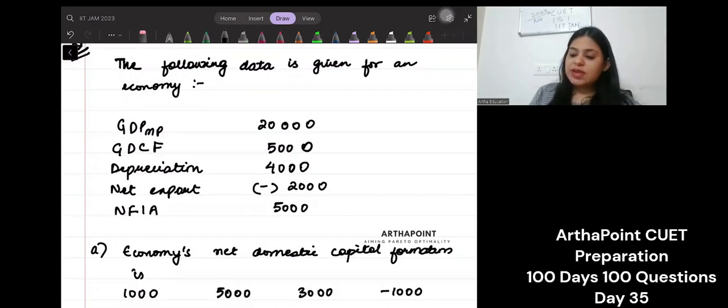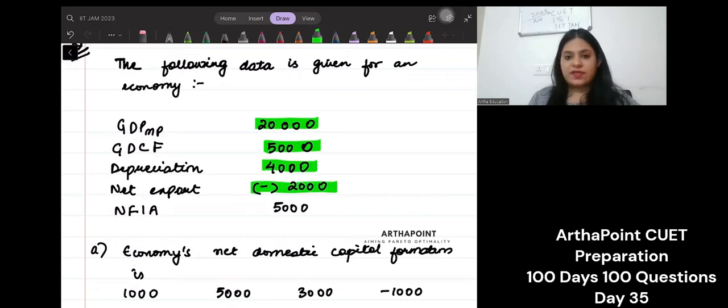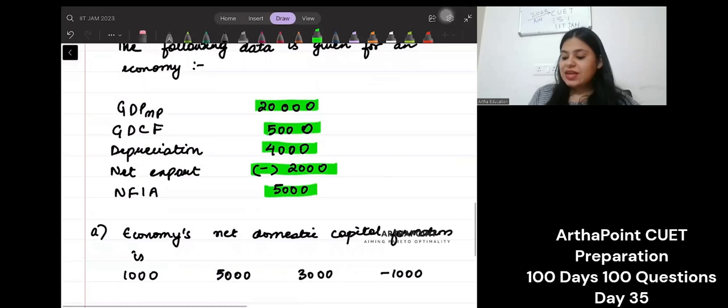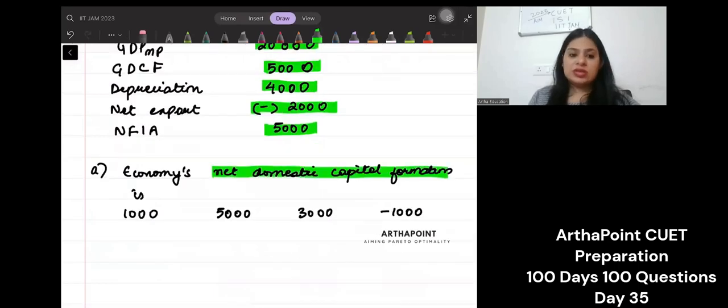It says that your GDP MP is 20,000. Gross domestic capital formation is 5,000. Depreciation is 4,000. Net export is 2,000. And net factor income from abroad is 5,000. It says the economy's net domestic capital formation is...